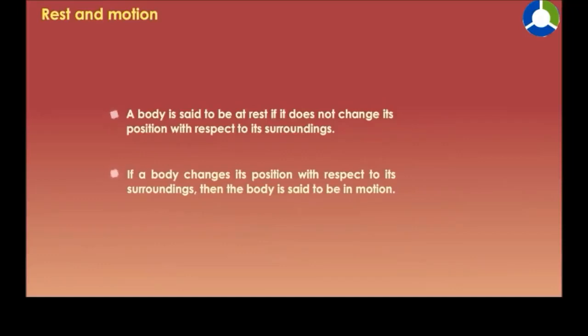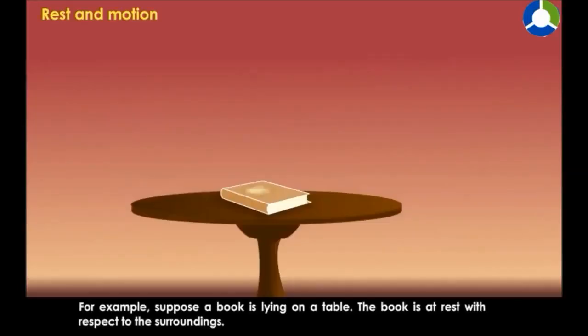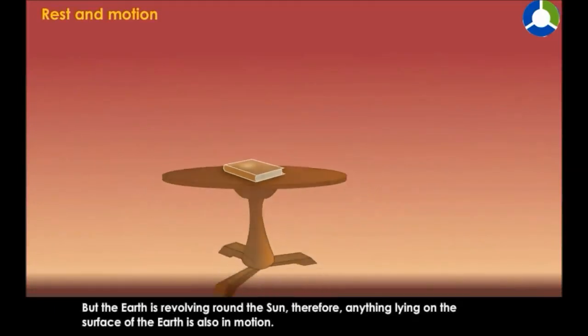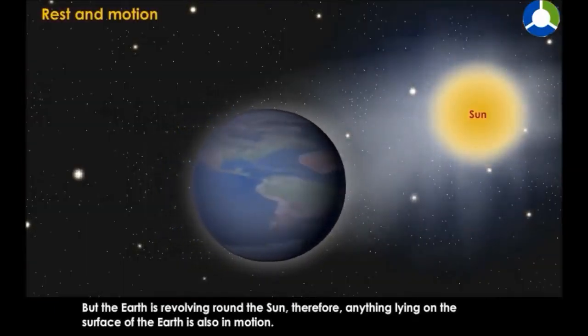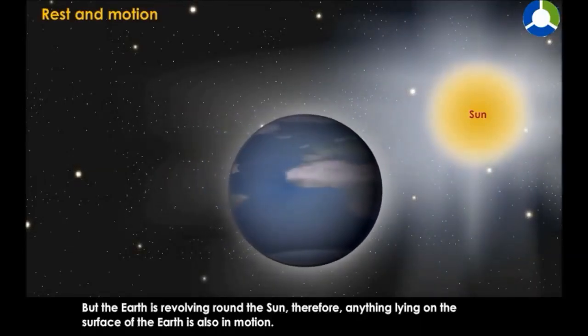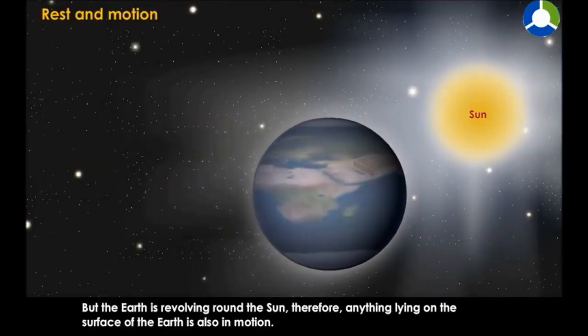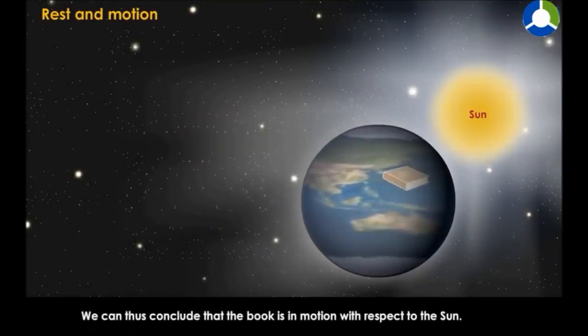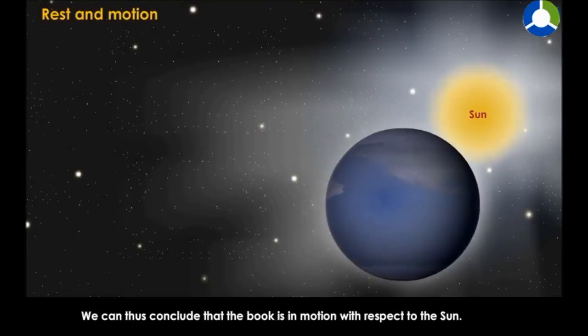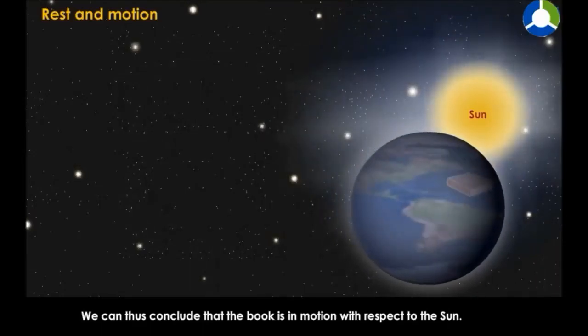For example, suppose a book is lying on a table. The book is at rest with respect to the surroundings. But the Earth is revolving around the Sun, therefore anything lying on the surface of the Earth is also in motion. We can thus conclude that the book is in motion with respect to the Sun.